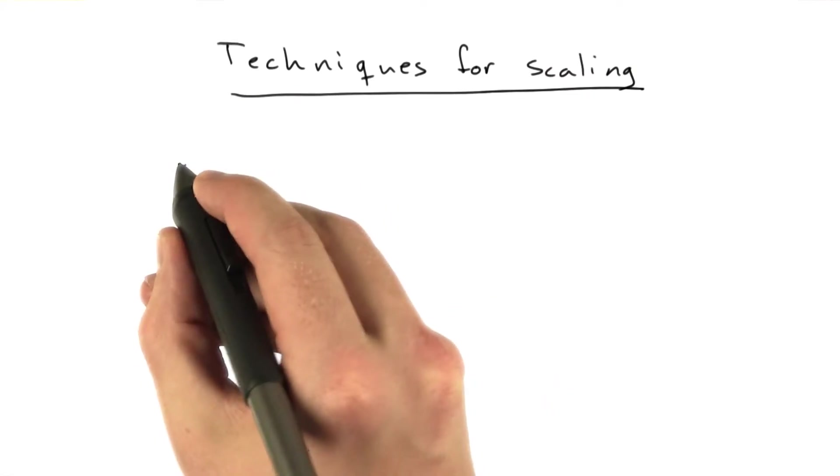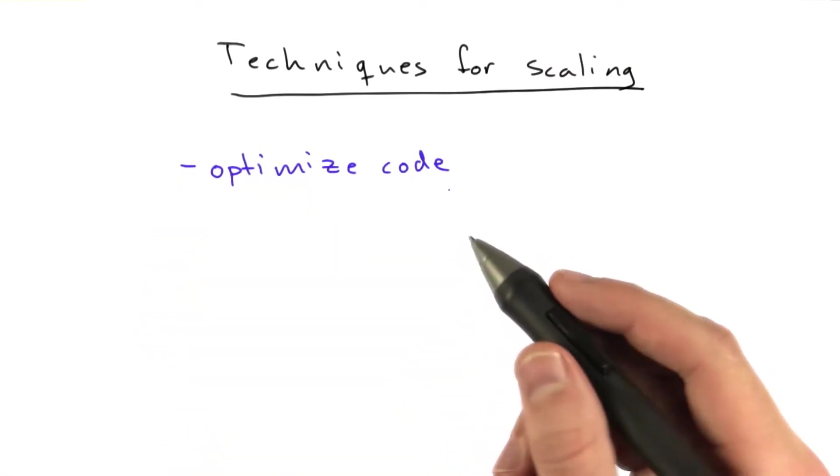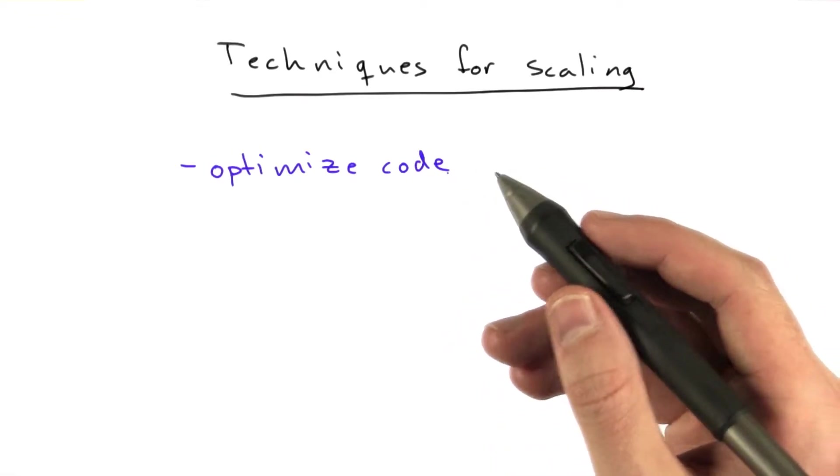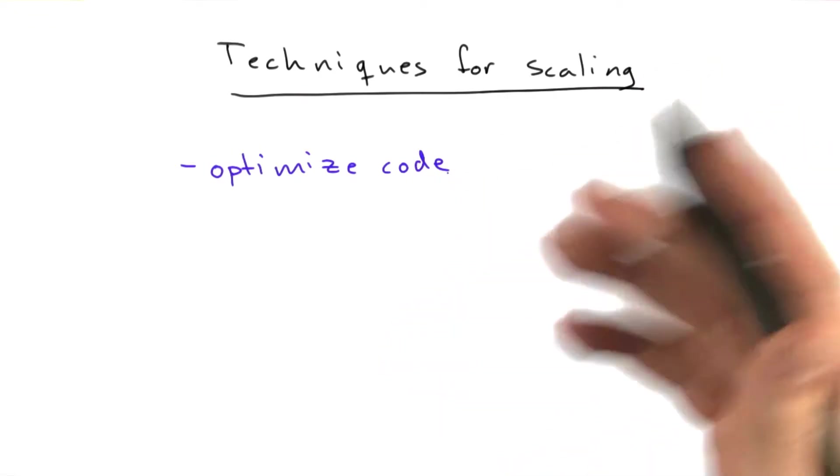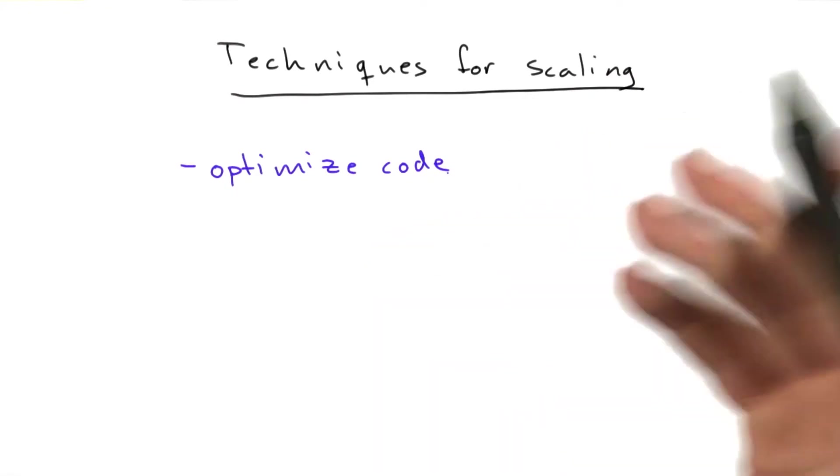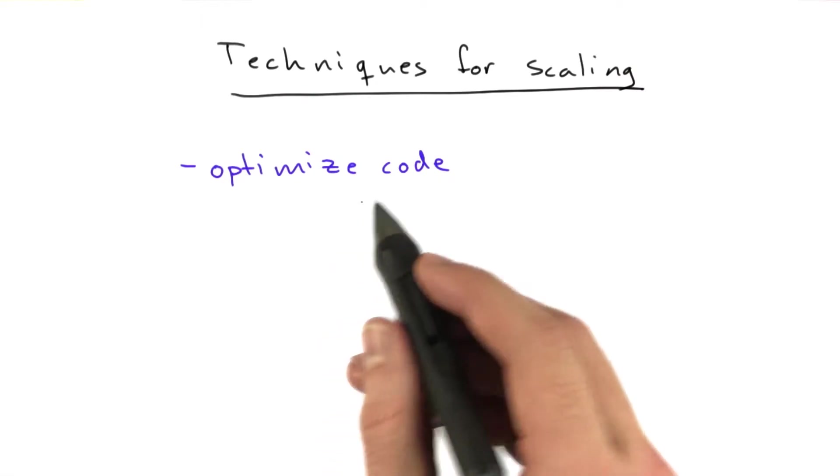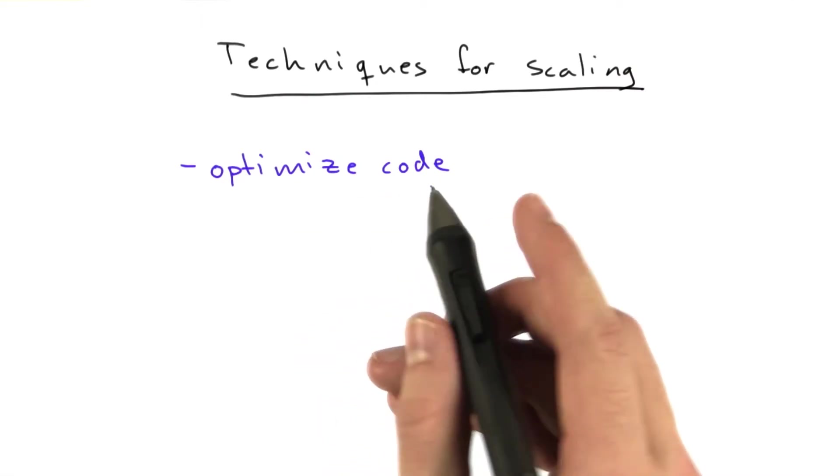So the first thing you should think about is optimizing your code. If you have the option between buying a second machine and figuring out how to have two machines working together on your website versus making your code twice as fast, maybe it's easier to optimize your code.